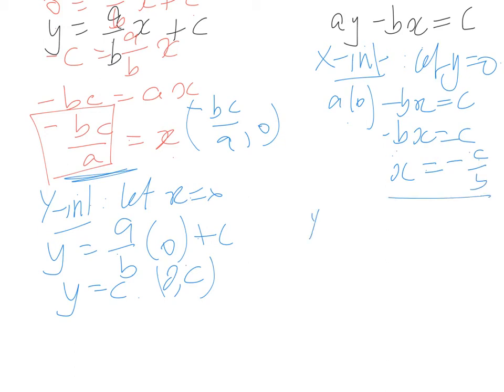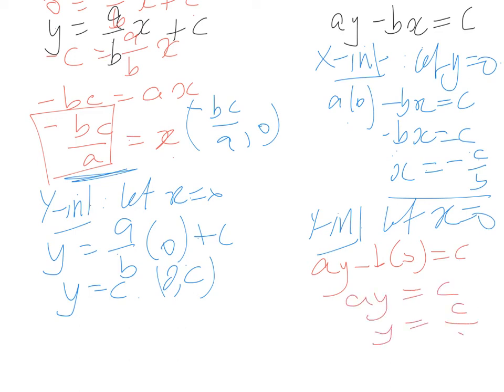For our y-intercept, let x equal 0. So from there, we've got ay minus b times 0 equals c. So we've got ay equals c. y equals c over a.